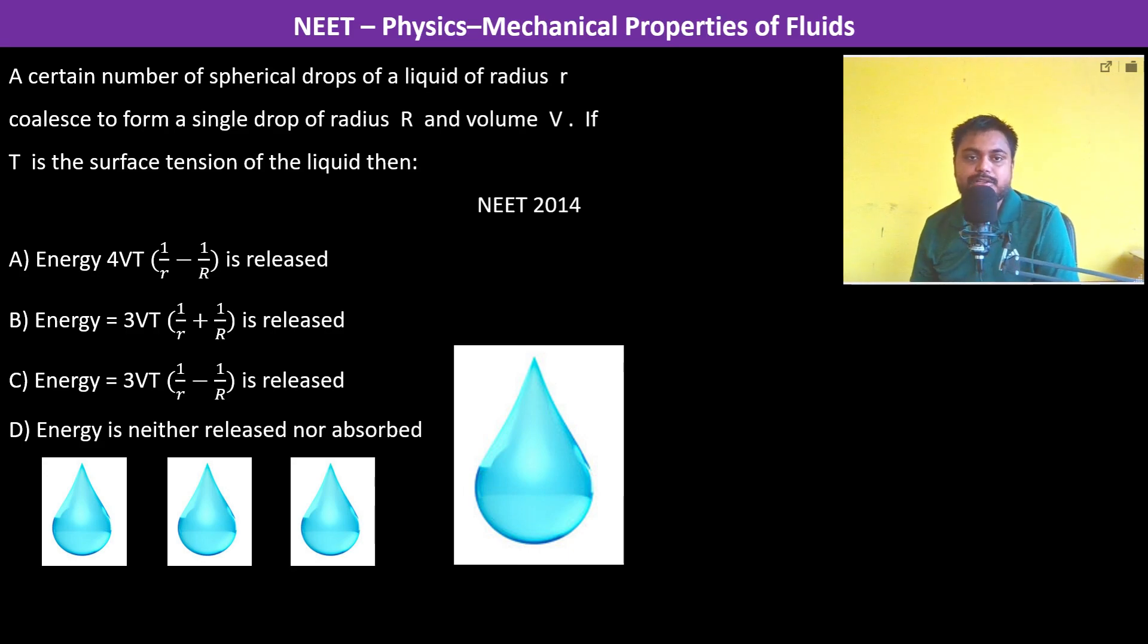A certain number of spherical drops of the liquid of radius r coalesce to form a single drop of radius capital R and volume V. If T is the surface tension of the liquid, then... So these are the small droplets and together they form a big droplet.